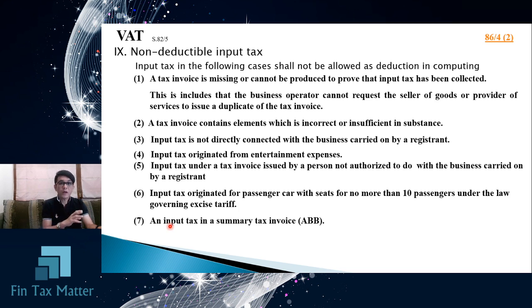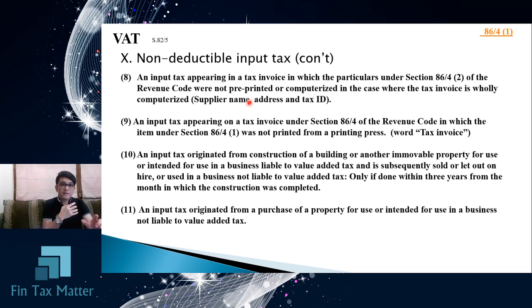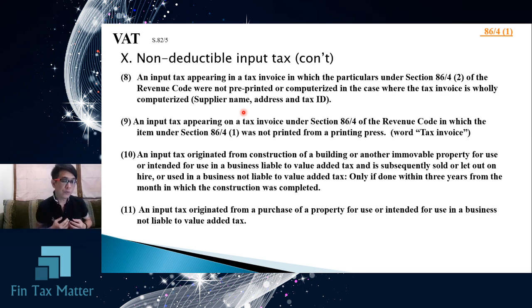The seventh case is input tax under a tax invoice that is in a void summary — this cannot be deducted. The eighth case is input tax where particular required items are not prepared by pre-print or computerized means. If the document is pre-printed or computerized, all required items such as supplier name, address, and tax ID must also be pre-printed or computerized. If these are instead handwritten or stamped, the tax invoice is not acceptable and cannot be used to claim input VAT.